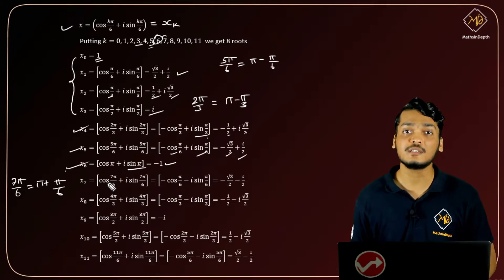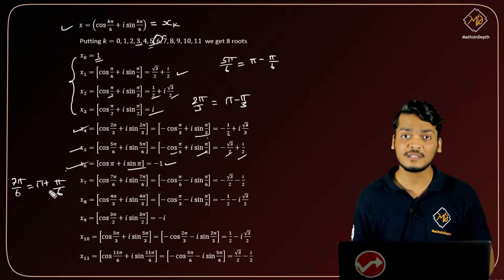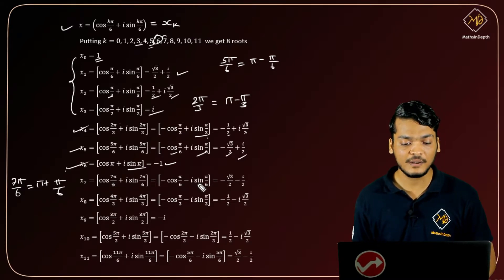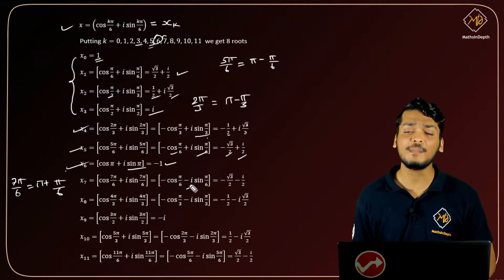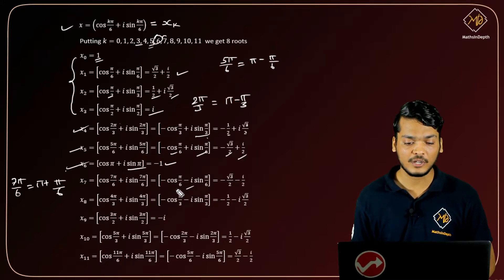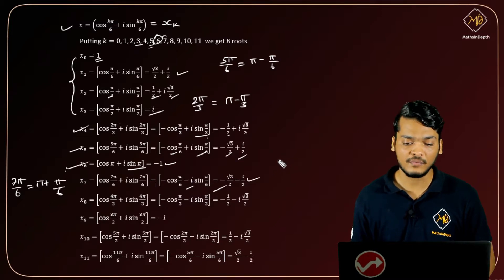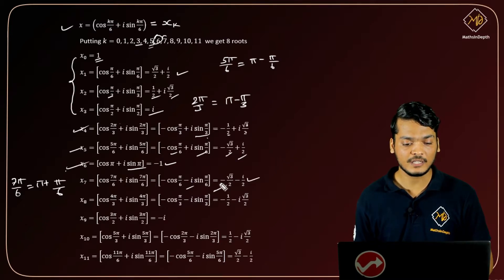7π/6 = π + π/6, so cos(π + π/6) = -cos(π/6) and sin(π + π/6) = -sin(π/6). Using the trigonometric properties: cos(π/6) = √3/2 and sin(π/6) = 1/2, giving the 8th root as -√3/2 - i/2.